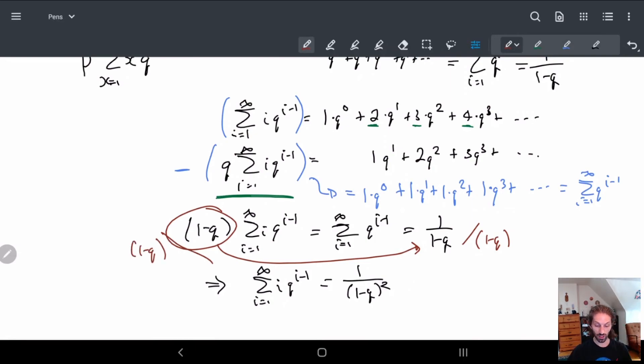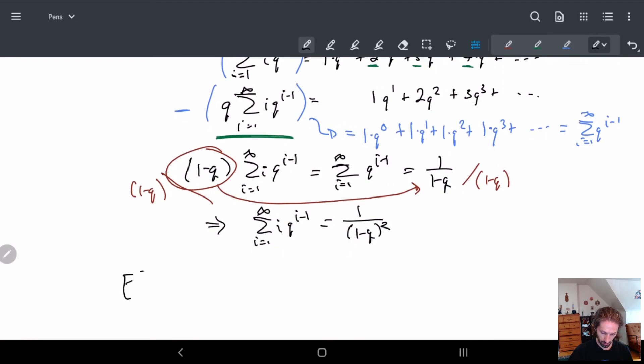So yeah, so we have this formula and so basically what we end up getting is the expected value of X. Remember this is equal to sum X Q to the X minus 1, X equals 0 to infinity. This basically gives me P over 1 minus Q squared.